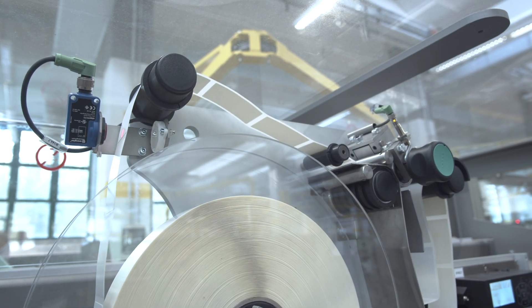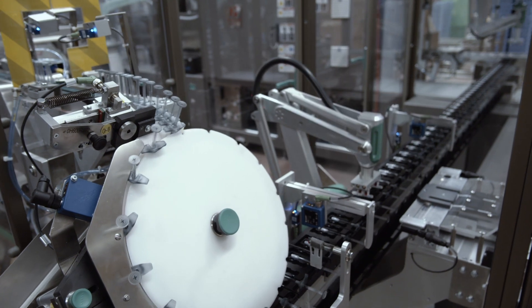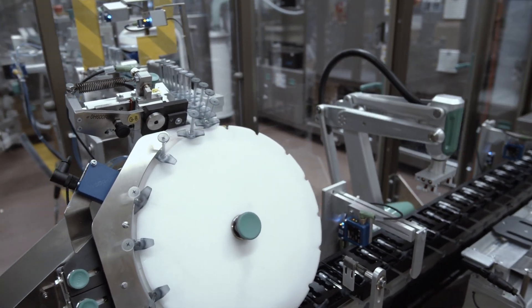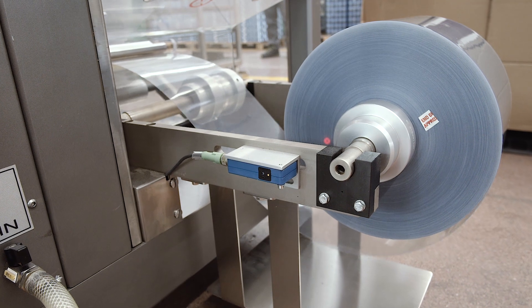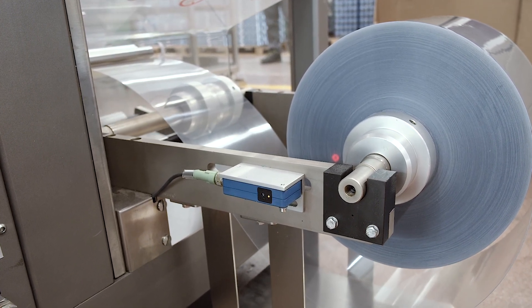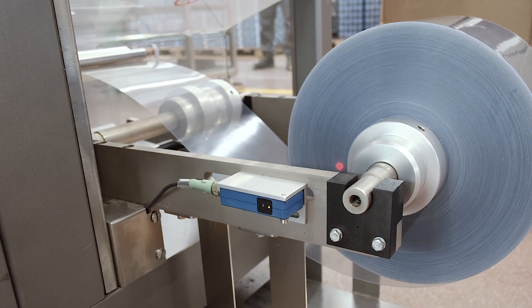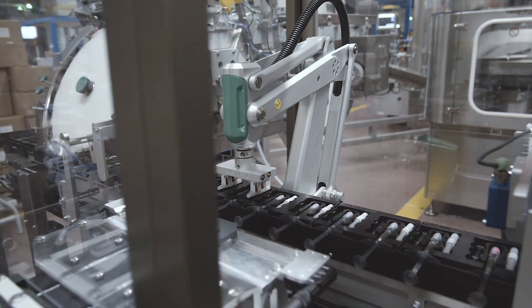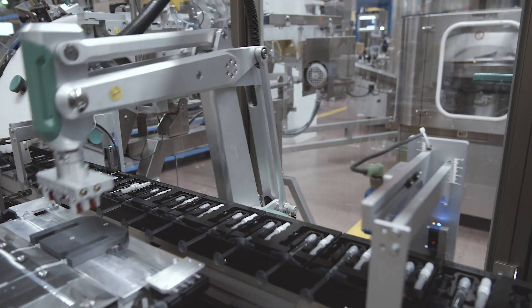Already at this stage, optical sensors determine whether material is present and correctly positioned. At the same time, transparent plastic sheet material is made available and molded in a deep drawing press. Robot arms then place the product into the blister packs.